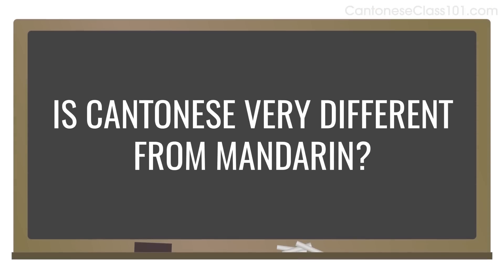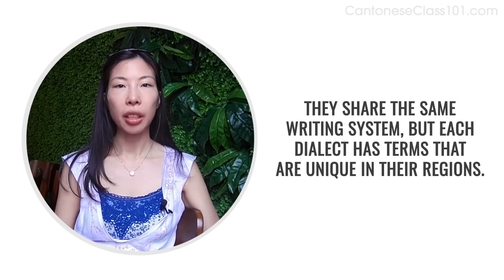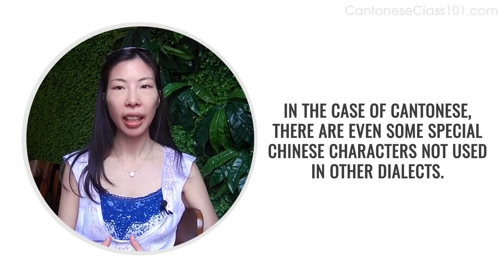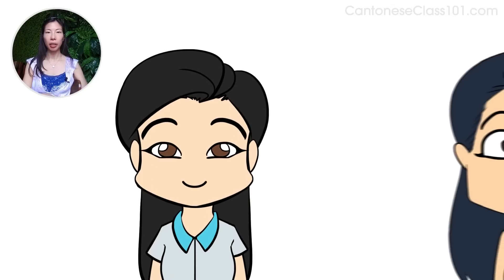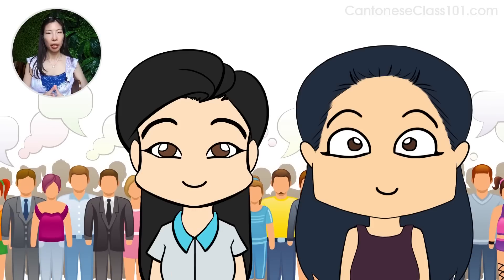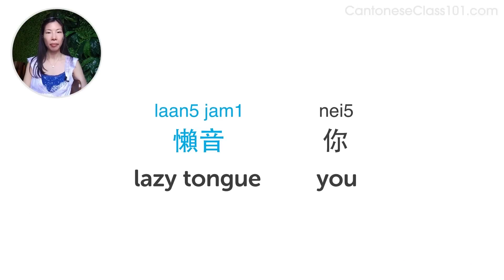Is Cantonese very different from Mandarin? Cantonese and Mandarin are two of the most spoken Chinese dialects. They share the same writing system, but each dialect has terms unique to their regions. In Cantonese, there are even special Chinese characters not used in other dialects. Interestingly, pronunciation among native Cantonese speakers in China can differ from that of speakers in Hong Kong. Many Hong Kong people, especially the younger generation, use conversational slang and speak what they call 懶音, meaning 'lazy tongue'. For example, 'you' should be pronounced 你, but many in Hong Kong say 你 instead.